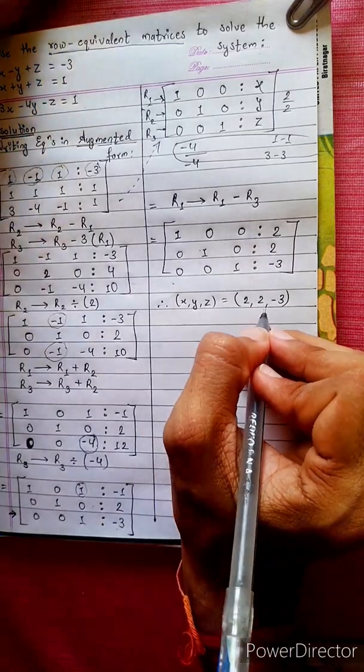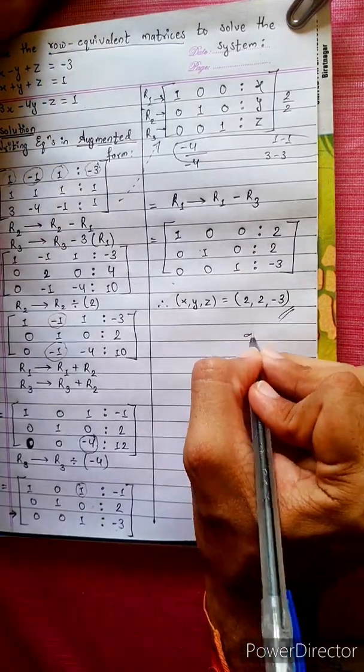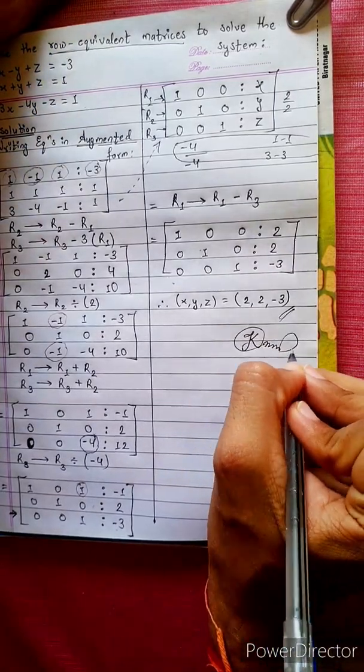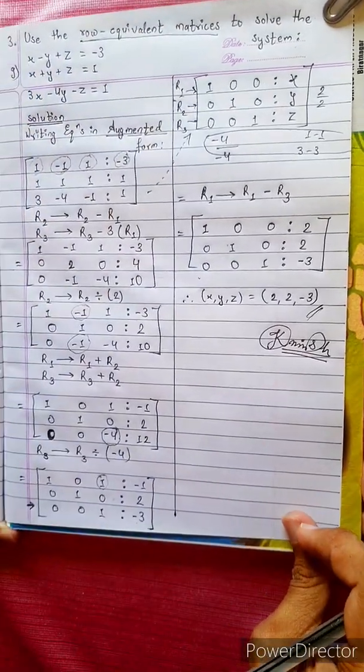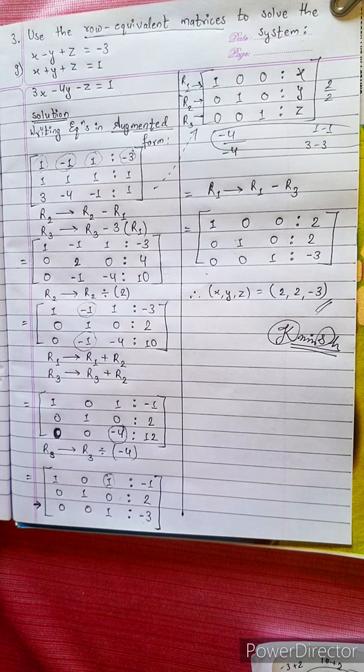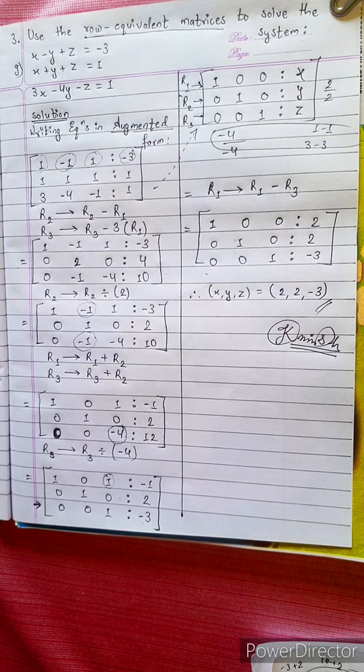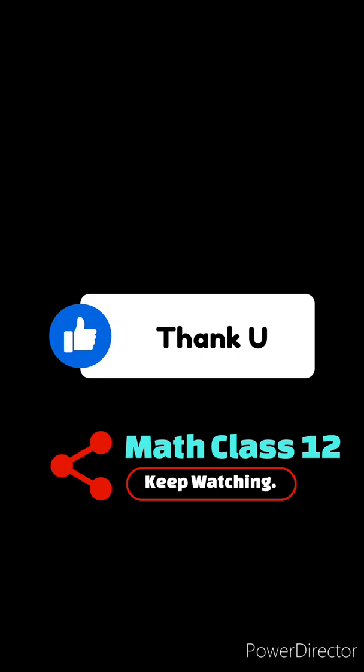Let's check the answer: 2, 2, minus 3 — that's the right answer. See you later, bye bye.